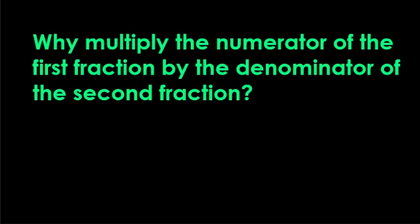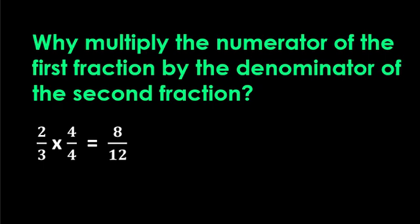Maybe you will ask why do we multiply the numerator of the first fraction by the denominator of the second fraction. It is because of the LCD. Whatever we multiply the denominator to reach the LCD, we must also multiply the numerator by the same number to keep the fraction's value the same. For example, 4 divided by 4 equals 1. And any number multiplied by 1 is the same. Make sense, right?